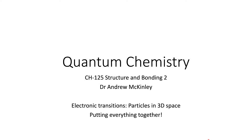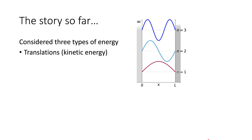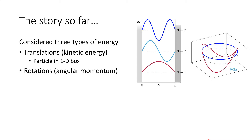In our last video, we're going to be putting everything together from quantum chemistry in order to visualize particles in 3D space. So if we remember the story so far, we considered the three types of energy. We first looked at translations, kinetic energy, by looking at the particle in the one-dimensional box. We then took those principles and adapted them to look at a particle in a ring, to consider rotational energies and angular momenta of rotating particles — useful for rotational spectra of molecules or electrons moving in an aromatic system.